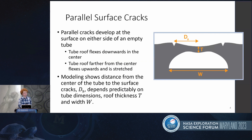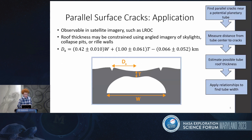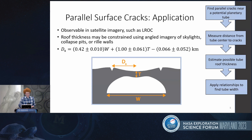For parallel surface cracks: from modeling I've been doing, I expect that a large empty lava tube will cause the roof to deform downwards into the tube, putting the roof to either side in tension and causing tensile cracking. I expect these tensile cracks on the surface above the tube to exist at predictable distances away from the tube, and these predictable distances depend on the width and the roof thickness of the tube. To use this to determine information about tubes from the surface: first, find examples of these parallel cracks near a potential lava tube — these should be visible in satellite imagery, such as lunar rock imagery. Then constrain the roof thickness, perhaps by looking at angled imagery of a skylight. Finally, use the relationship I found to combine the distance from the tube to the cracks with the roof thickness to constrain the tube width.